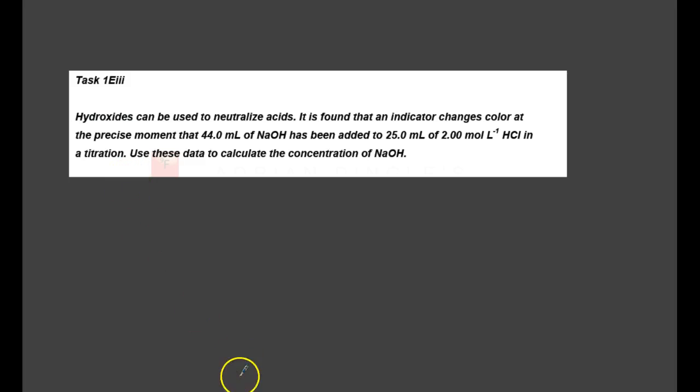We have NaOH plus HCl, and an acid plus a base, or in this case a base plus an acid, makes a salt. So we got NaCl, table salt, plus water. And I believe this is all a one-to-one ratio.